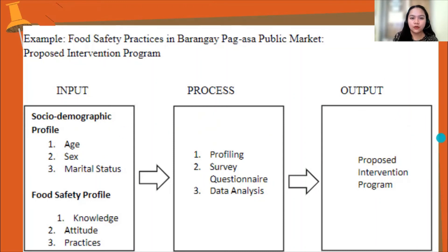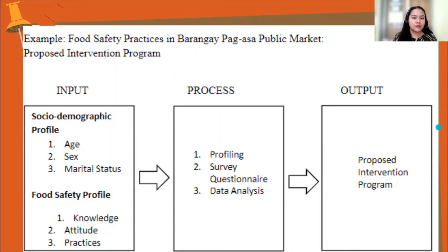You should always know your independent variables, the instrument you are going to use, and your anticipated result, so that you can easily make your Input Process Output paradigm. Review your research paper so you can make your paradigm.